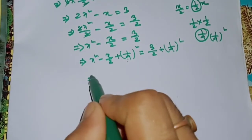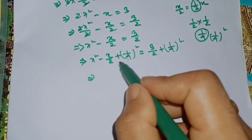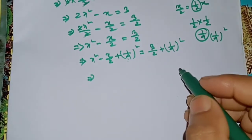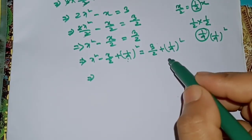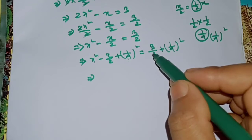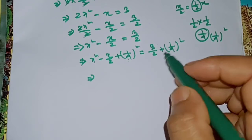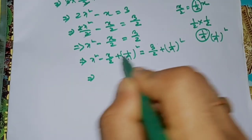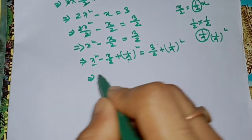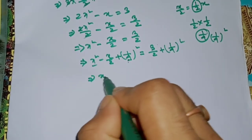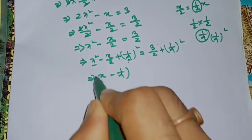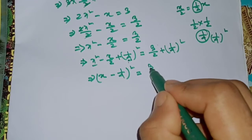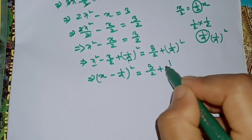This is called the identity: a² minus 2ab plus b² equals (a - b)². So we have x minus 1 by 4 whole square, 3 by 2 plus 1.